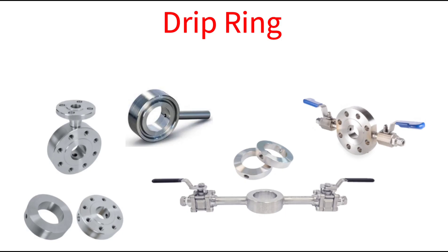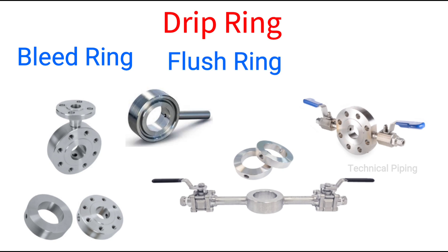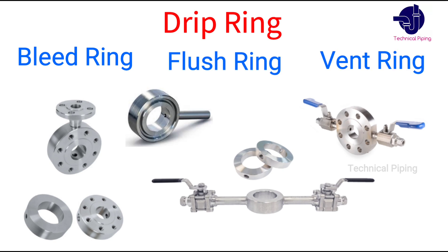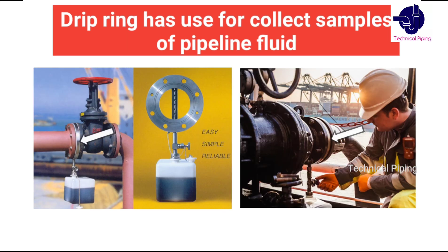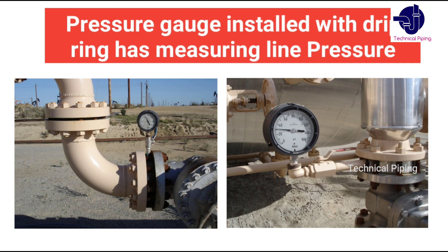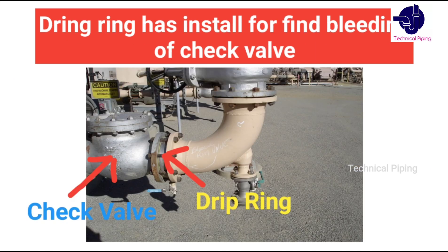Trip rings, also known as bleed rings, flushing rings, or vent rings, provide a means for draining and venting of piping streams, sample takeoff points, attaching instruments, or even bleeding of valves.